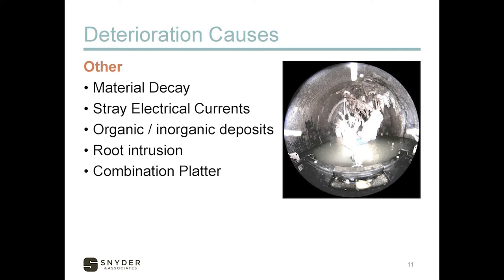The most unique we found was a picture showing rebar and debris hanging down into the pipe. When we did our investigation, we discovered this location was directly below a piling for a bridge abutment that passed above it. When they put in the bridge, they drove the pile and it broke through the top of the pipe, caused all the damage, and was presenting a blockage risk.